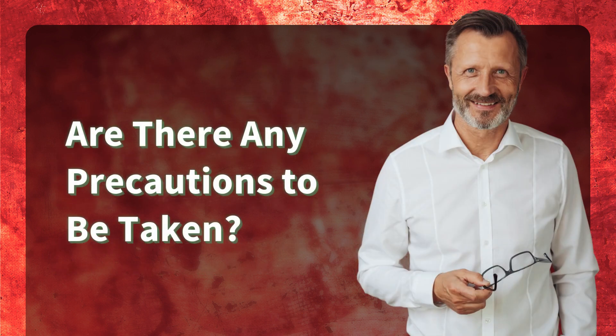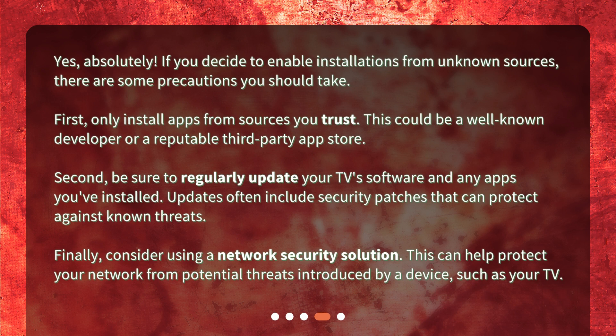Are there any precautions to be taken? Yes, absolutely. If you decide to enable installations from unknown sources, there are some precautions you should take. First, only install apps from sources you trust — this could be a well-known developer or a reputable third-party app store. Second, be sure to regularly update your TV's software and any apps you've installed, as updates often include security patches that can protect against known threats. Finally, consider using a network security solution, which can help protect your network from potential threats introduced by a device such as your TV.